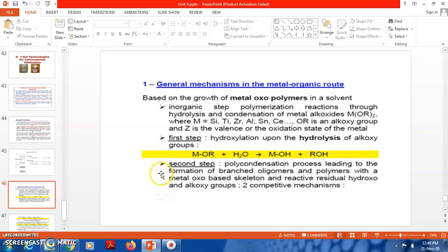The general mechanism in the metal-organic route is based on the growth of metal-oxo polymers in the solvent through hydrolysis and condensation of metal alkoxides. M is the metal (silicon, titanium, zirconium, aluminum), OR is the alkoxy group, and Z is the valence or oxidation state of the metal. First is hydroxylation upon hydrolysis of alkoxy groups.